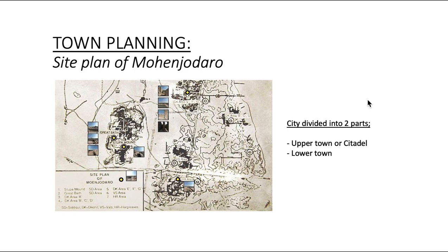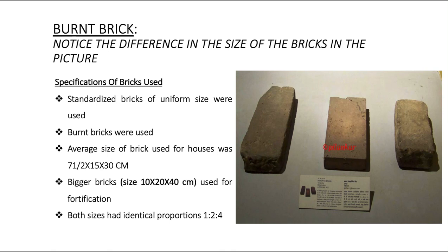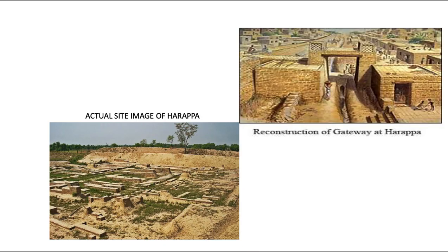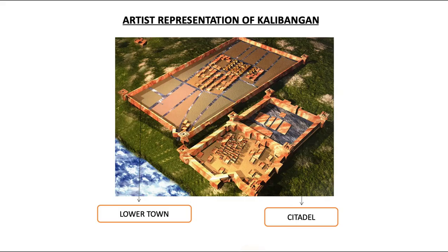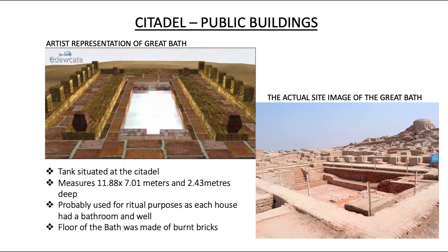Burnt bricks were used for town planning. The specifications of the bricks show that standardized bricks of uniform size were used. On the left-hand side is the actual site image of Harappa, and on the right is the reconstruction of the gateway at Harappa. There is also an artist's representation of Kalibangan. The citadel and the lower town are clearly visible, showing how physically separated both areas were.